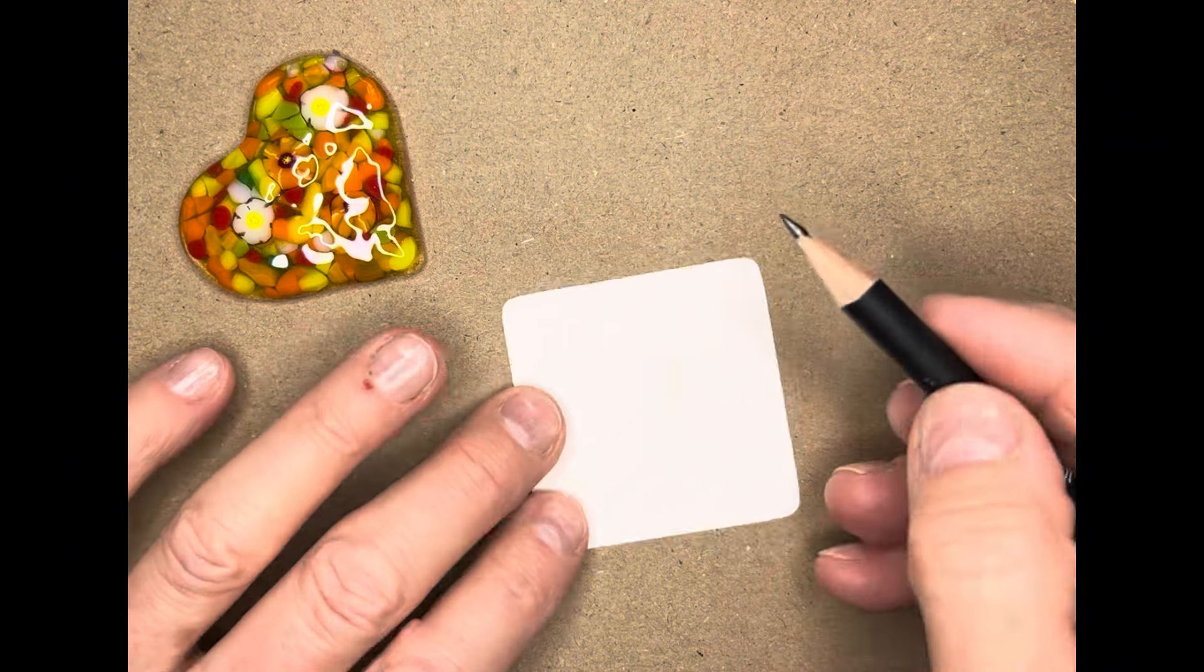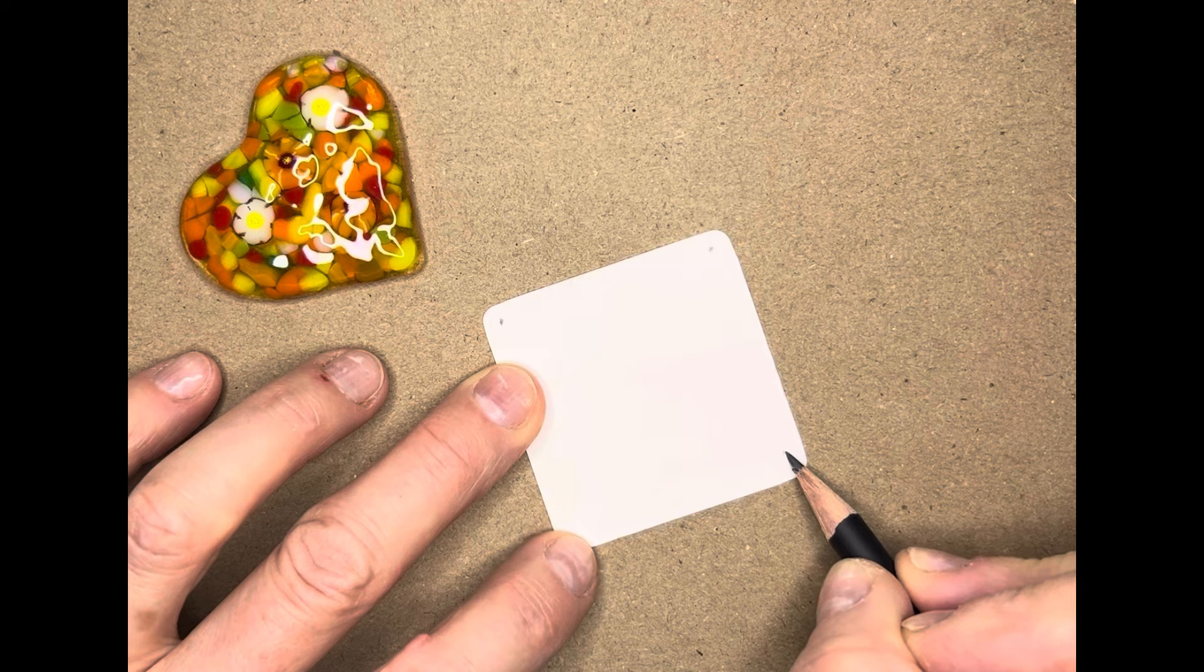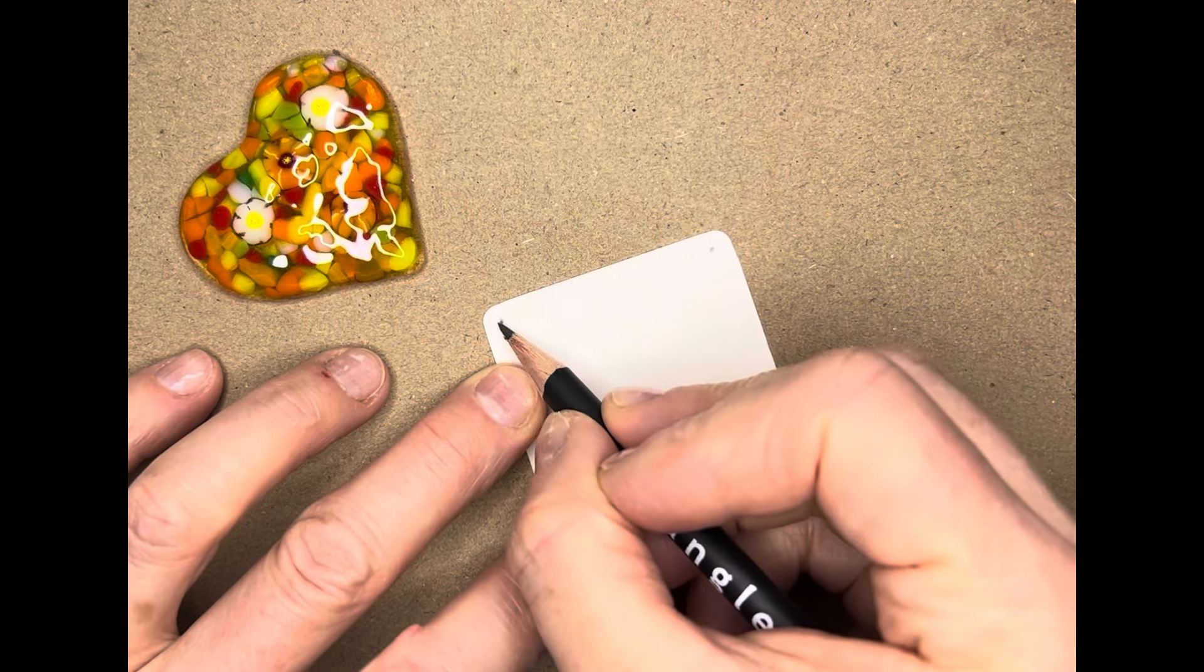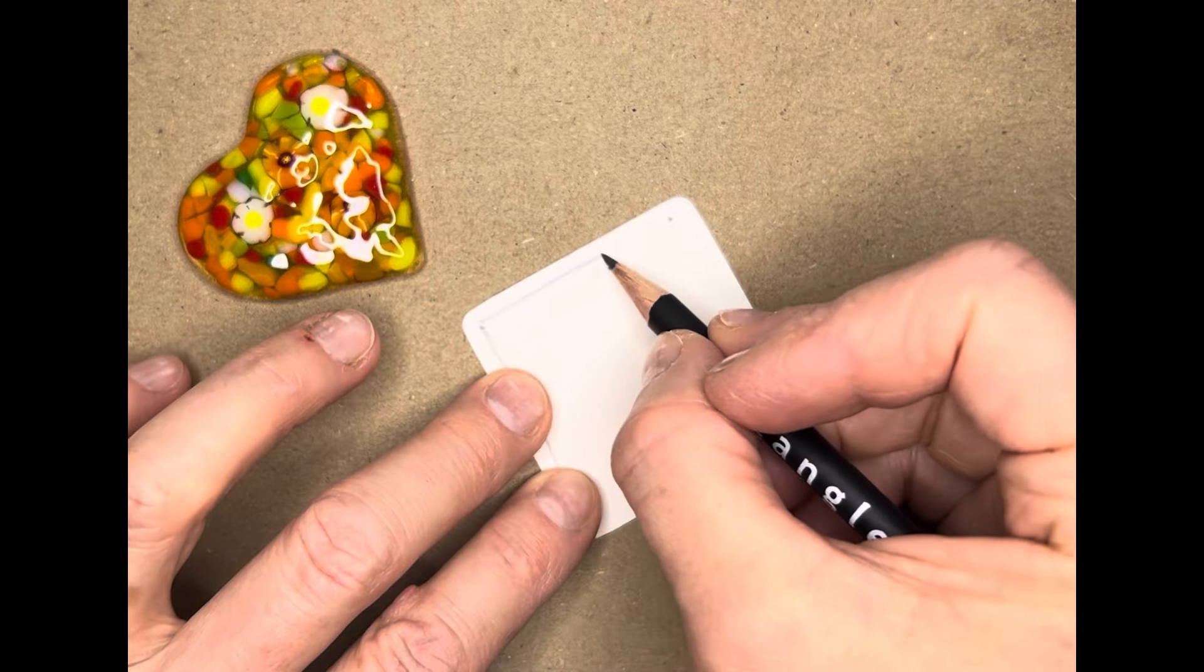So let's start with our pencil, adding our four corner dots and joining them with a light quick stroke of your pencil to create a border.